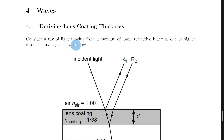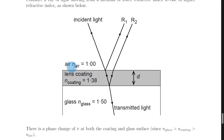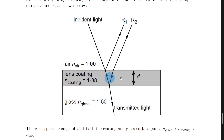To begin, consider a ray of light moving from a medium of lower refractive index to one of higher refractive index, as shown in the diagram — in other words, going from a less dense medium into a more dense medium. We're going from air into glass but we've also got this lens coating placed in between. The air has a refractive index of 1.00, the lens coating has a refractive index of 1.38, and the glass has the greatest refractive index of 1.50, so the refractive index is increasing as we go through the materials. We've got a ray of incident light coming towards the lens coating surface.